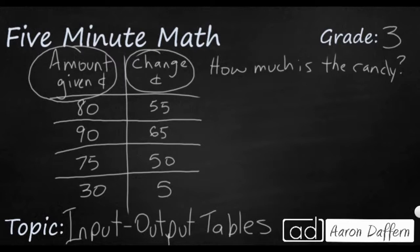If you look from top to bottom, you see our numbers change from 80, they go up to 90, but then they go down to 75 and then down to 30. There's really no pattern there. So we're not going to be able to look up and down to find a pattern. What we need to do is look side to side. We need to look between the two different columns of numbers, the amount given and the change.